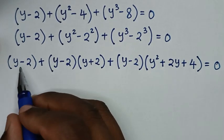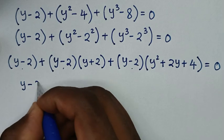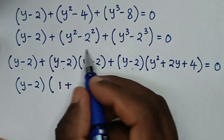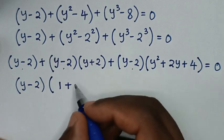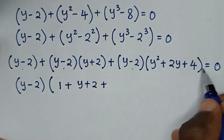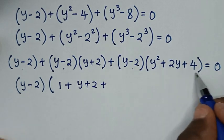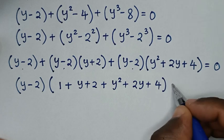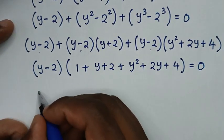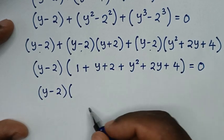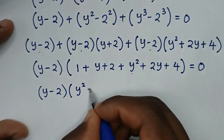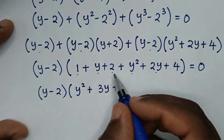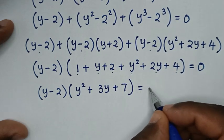Now y minus 2 is common, so we factor it out: bracket y minus 2 bracket times bracket 1 plus y plus 2 plus y square plus 2y plus 4 bracket equals 0. Combining like terms inside: y minus 2, times bracket y square plus 3y plus 7 bracket, equals 0.